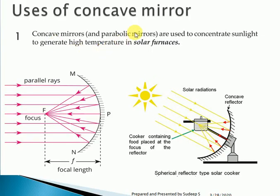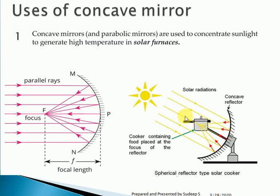Uses of concave mirrors: concave mirrors are used to concentrate sunlight to generate high temperatures in a solar furnace. The sun is at infinity, the rays coming from it converge at a point — a cooker containing food is placed at the focus of the reflector. This is the sixth case where the object is at infinity and all rays converge at the focus point.